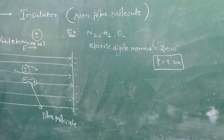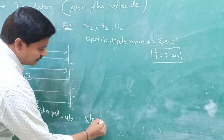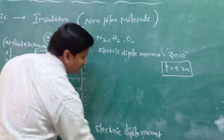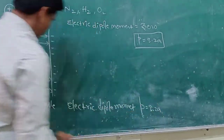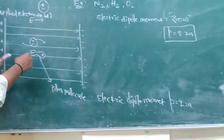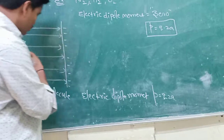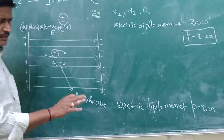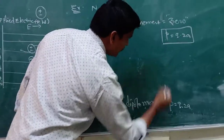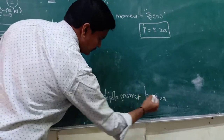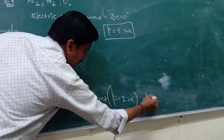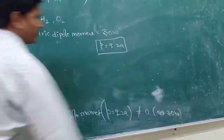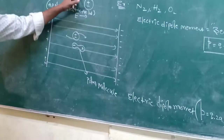But in the case of a polar molecule, the electrical dipole moment P equals Q × 2d, and a separation exists between the two charges. Q is the magnitude of charge — 1.6 × 10⁻¹⁹ coulombs — but the sign differs. Therefore, the dipole moment P is not equal to zero.